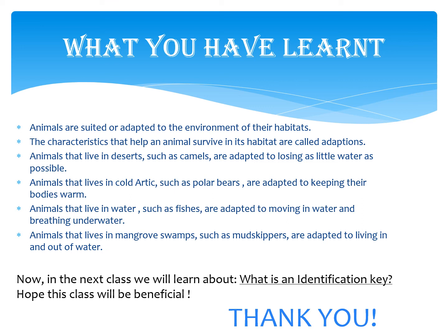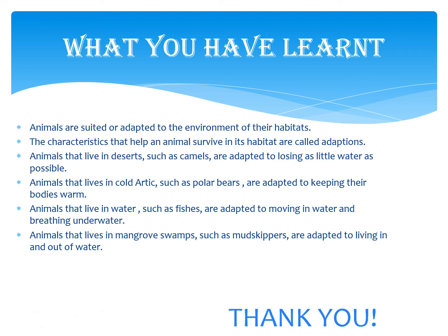So we have seen these four examples. What we learned today is that animals are adapted to the environment of their habitat, and the characteristics that help an animal survive are called adaptations. Different animals live in different places — deserts (camels), cold arctic (polar bears), water (fishes), and mangrove swamps (mudskippers). In the next session we will learn about what is an identification key. Thank you.